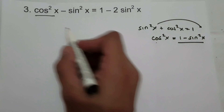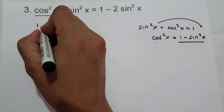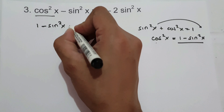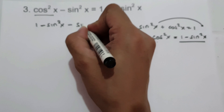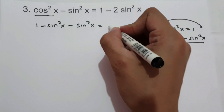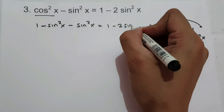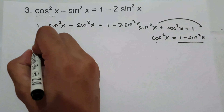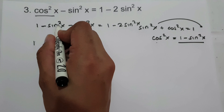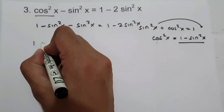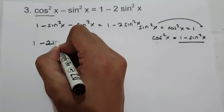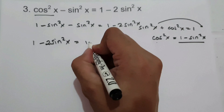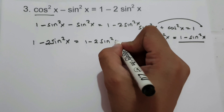So let us substitute this one to the given equation. So we have 1 minus sin squared x, and then let us write negative sin squared x equals 1 minus 2 sin squared x. So let us simplify: 1 minus sin squared x minus sin squared x, that is negative 2 sin squared x. So therefore, we prove the given identity.